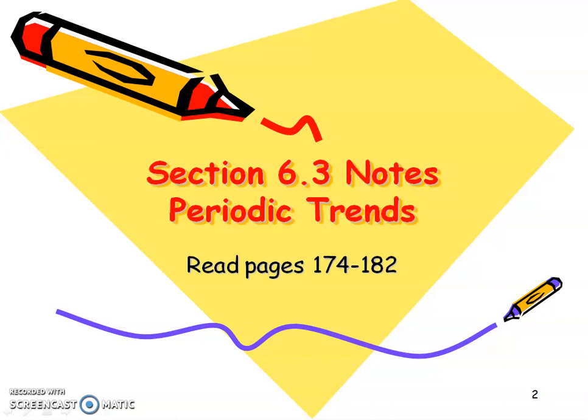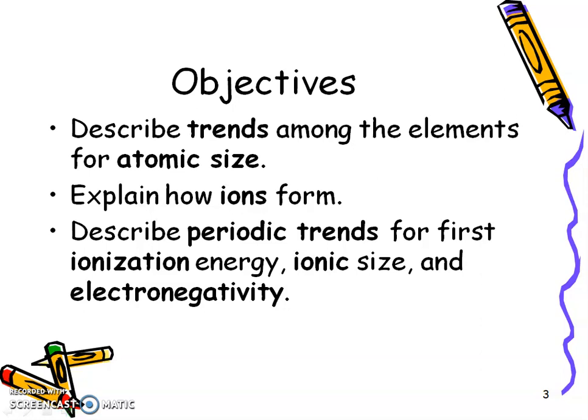This is Mrs. O'Neill for Chapter 6, Section 3, Periodic Trends. In this section, you're going to be able to describe trends among elements for atomic size, explain how ions are formed, and describe the periodic trends for first ionization energy, ionic size, and electronegativity.